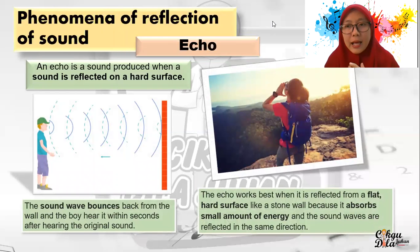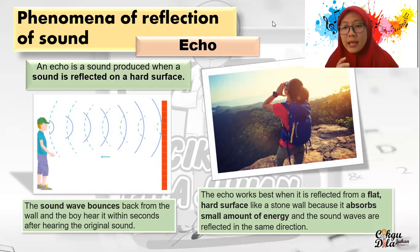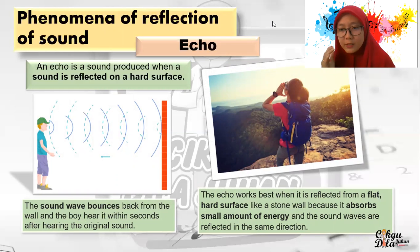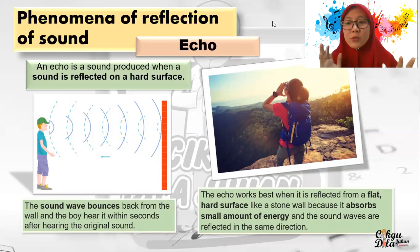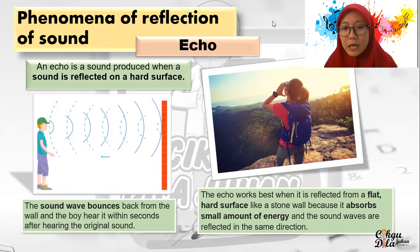How does echo work? The echo works best when reflected from a flat, hard surface like a stone wall, because it absorbs only a small amount of sound energy, and the sound waves are reflected in the same direction. If the surface is not flat and is soft and smooth, the reflection is less because it absorbs more of the sound's energy. If the surface is flat and hard, it can reflect better because it absorbs only a small amount of energy.